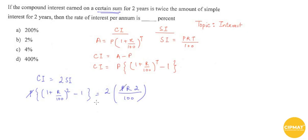This will give you R squared by 100 squared plus 2R by 100, and this equals 4R by 100.